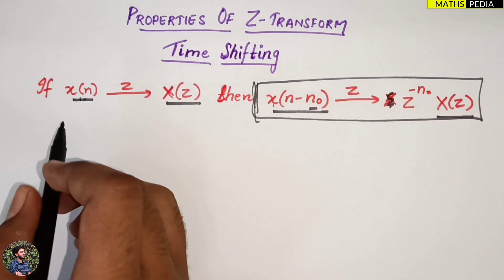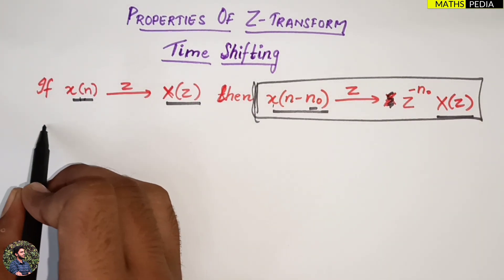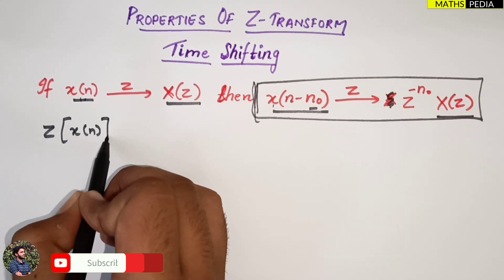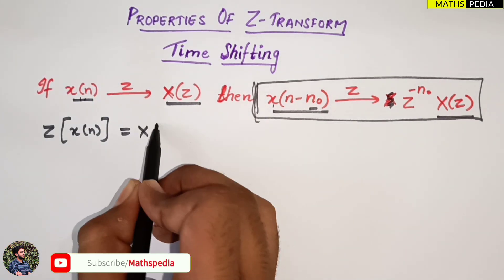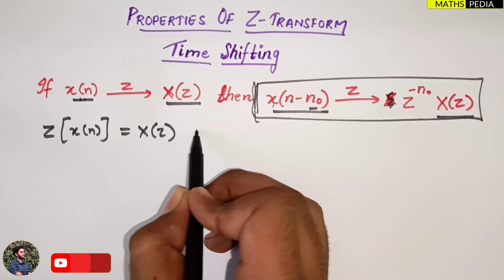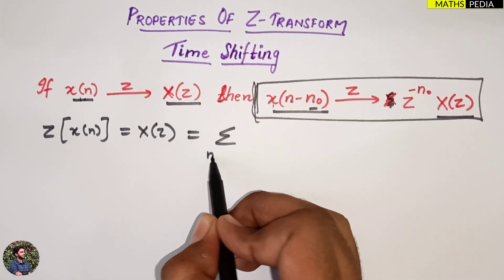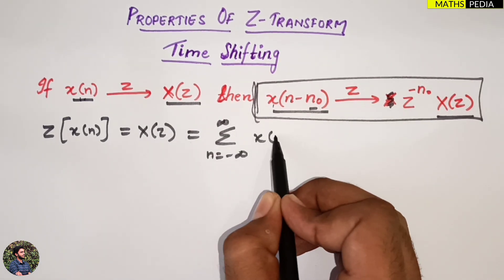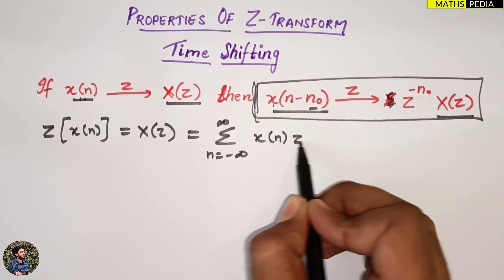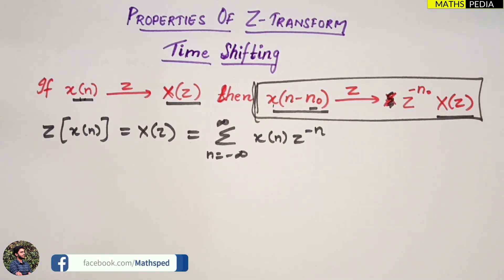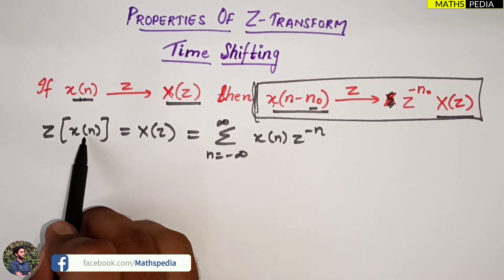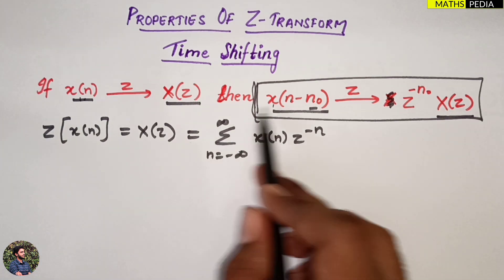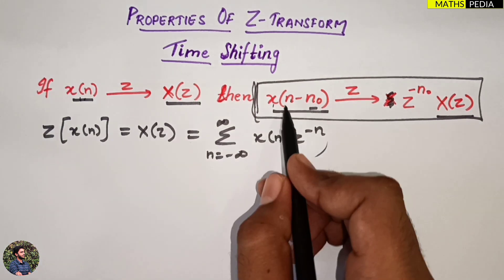We will go by the definition. The Z-transform of x(n) is X(z). The formula for that is: summation from n equal to minus infinity to infinity of x(n) into z power minus n. This is the standard formula — if x(n) is a signal, the Z-transform of that will be this.